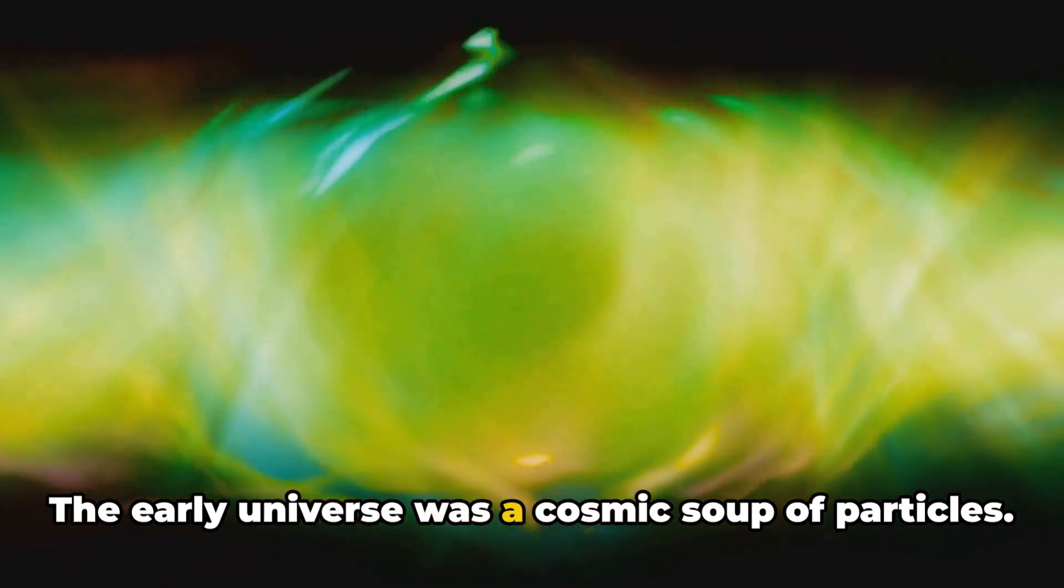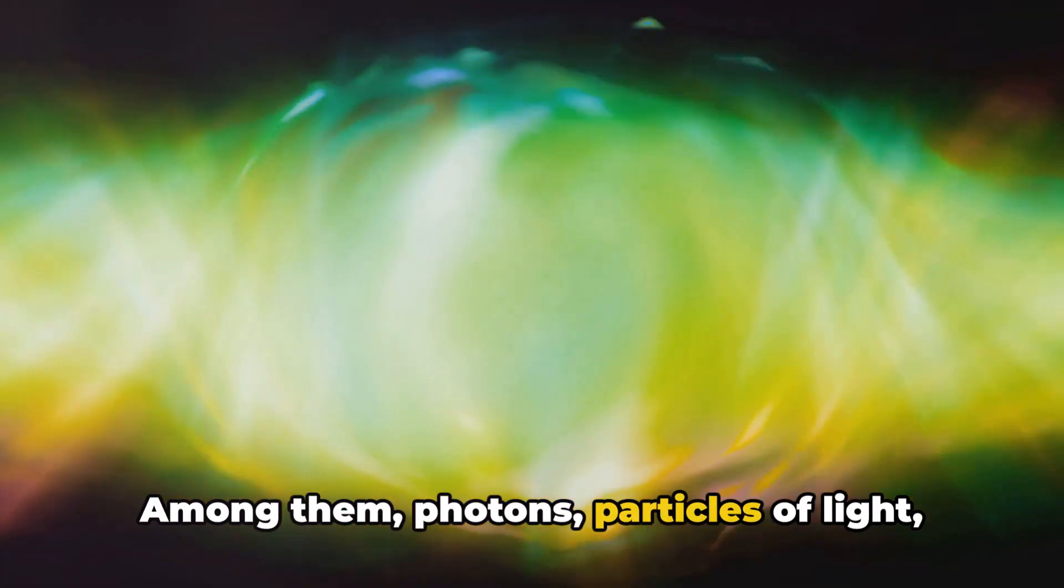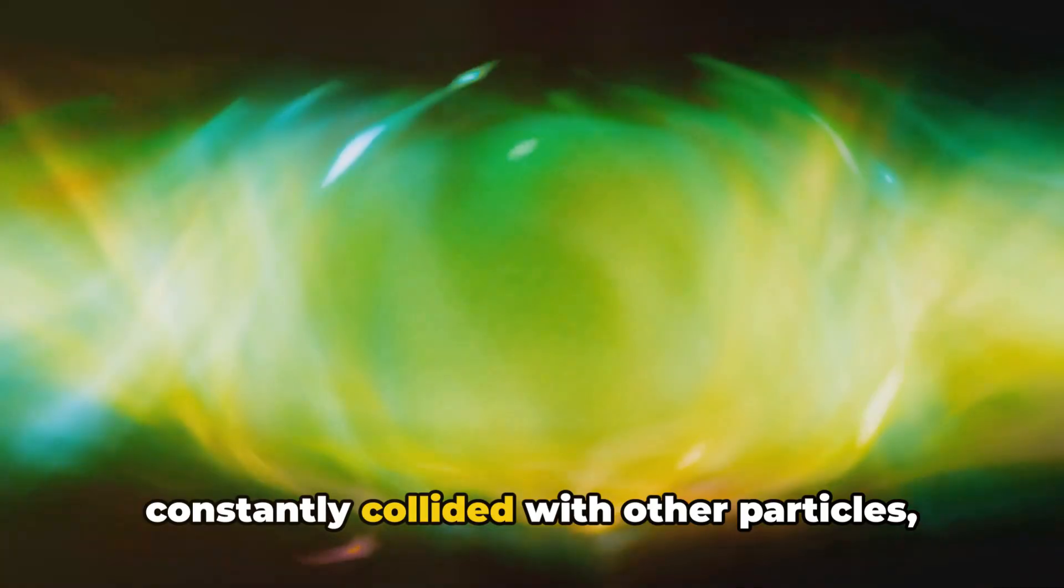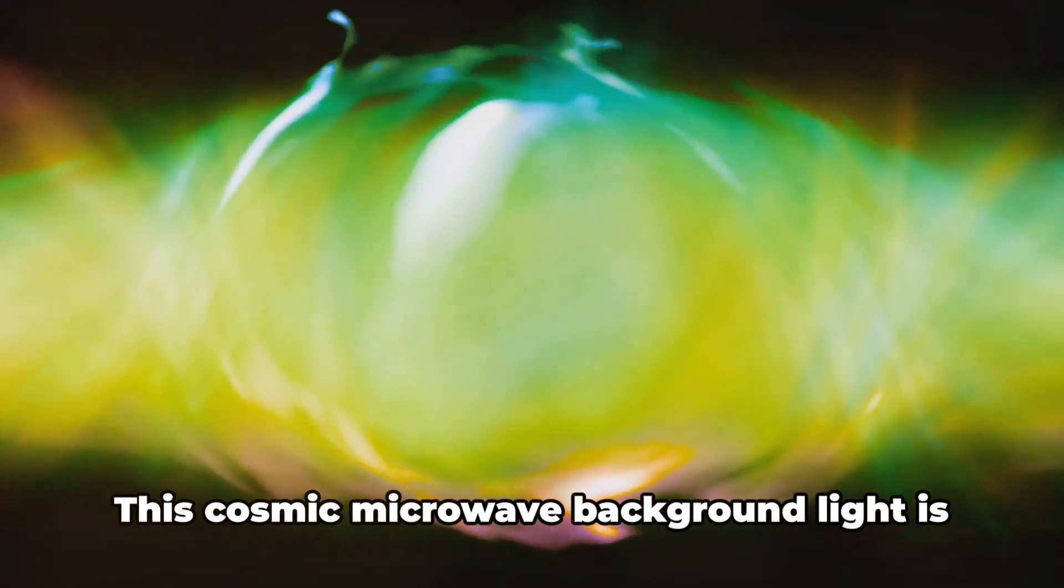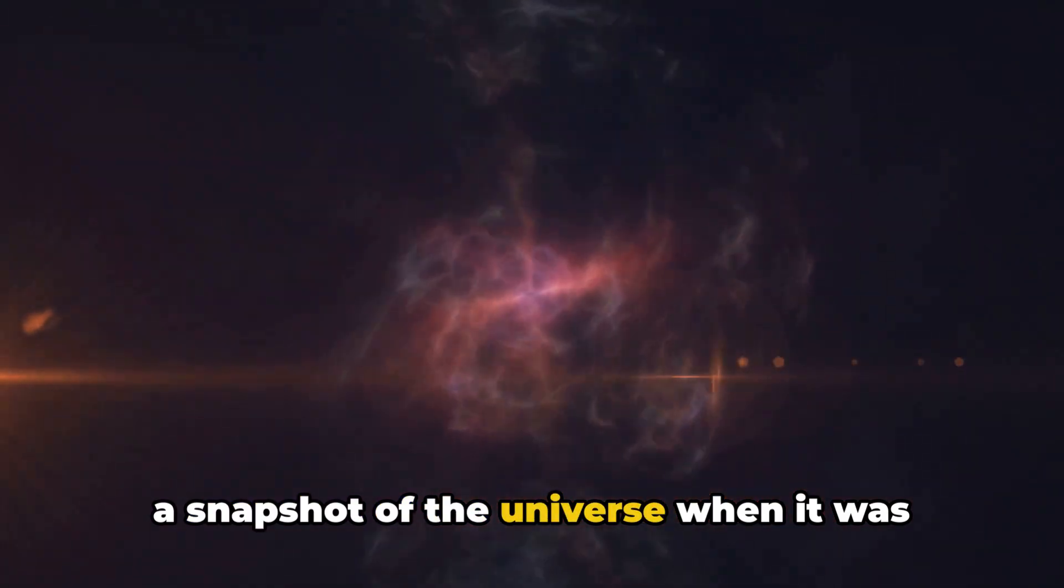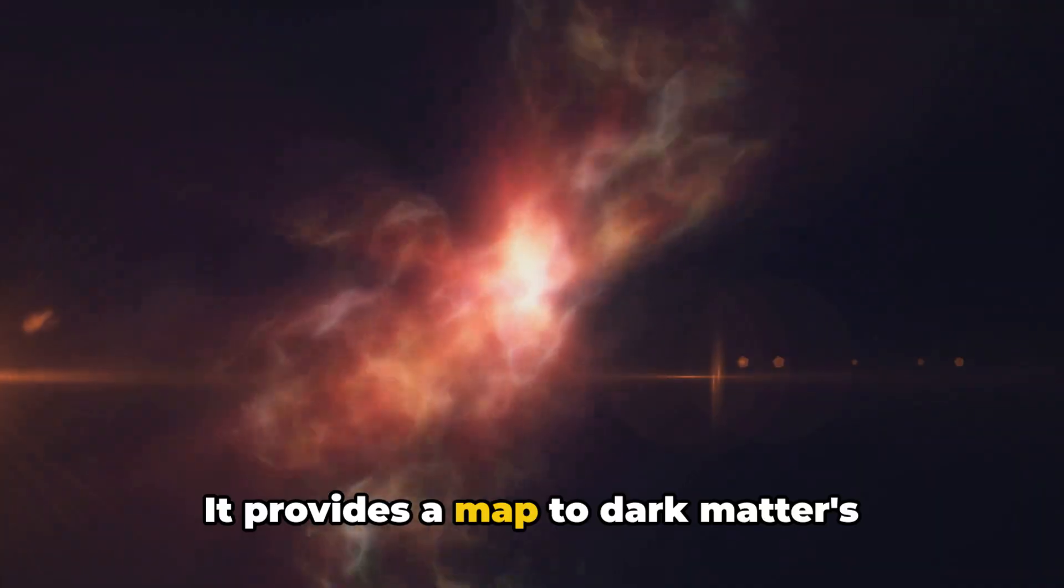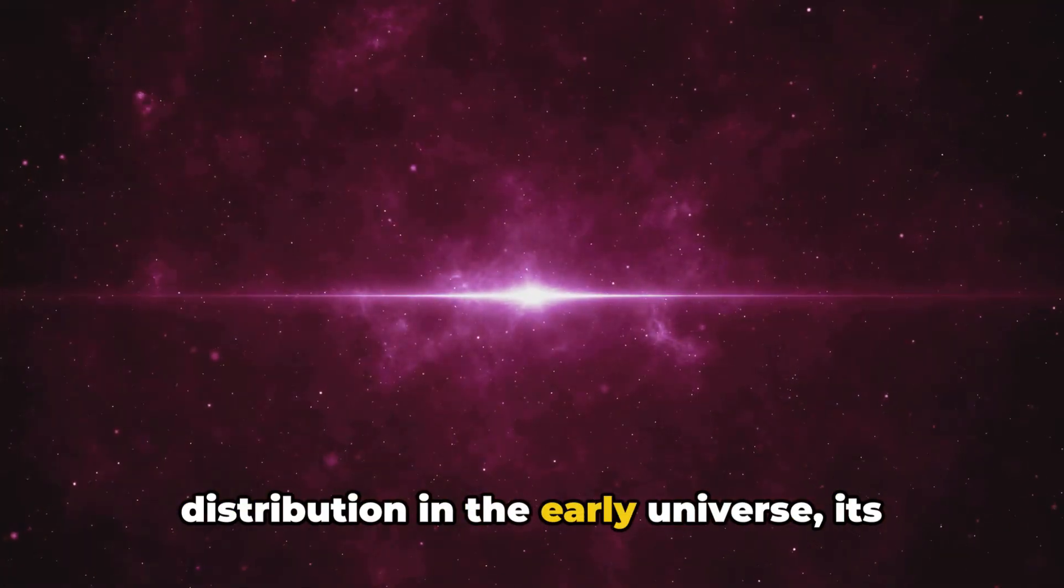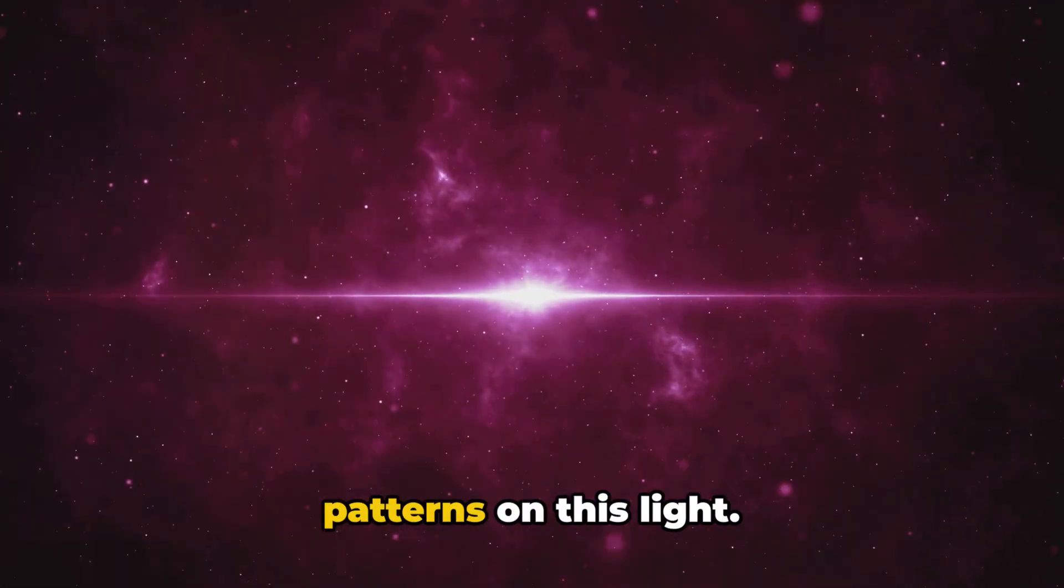The early universe was a cosmic soup of particles. Among them, photons, particles of light, constantly collided with other particles, creating a radiant afterglow. This cosmic microwave background light is a snapshot of the universe when it was just 400,000 years old. It provides a map to dark matter's distribution in the early universe, its gravitational effects imprinting subtle patterns on this light.